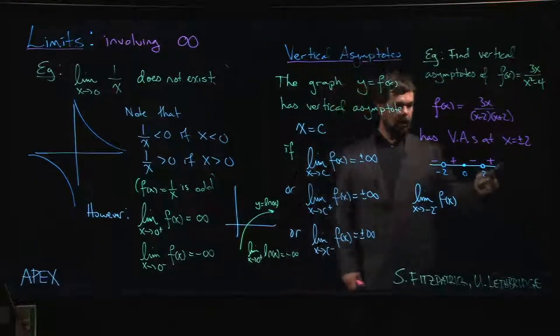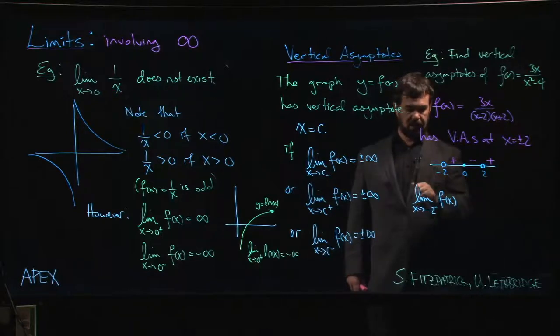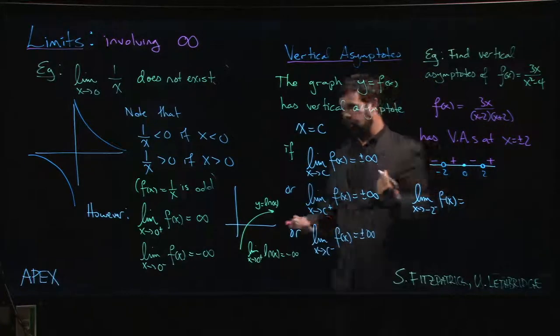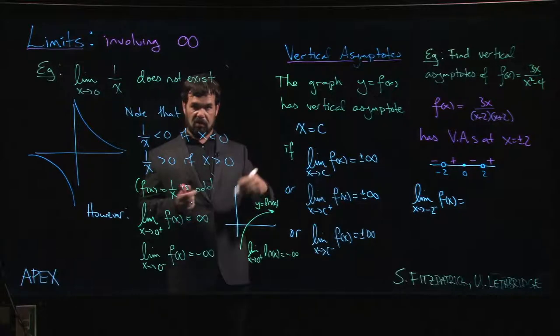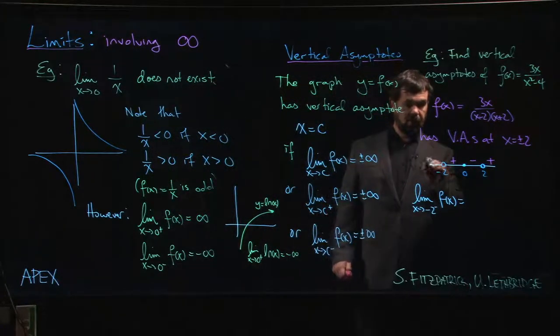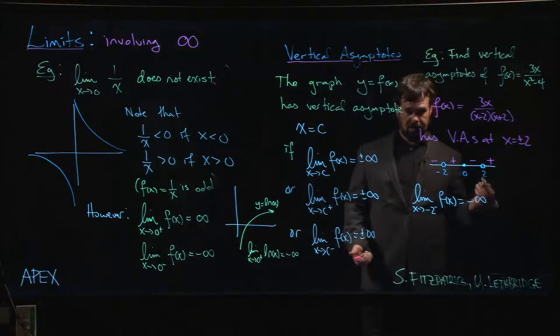Well, I look at my sign chart, I see that when x is to the left of minus 2, f of x is negative. I've got a vertical asymptote. I'm dividing by 0 at minus 2. So I know the function is growing without bound. The only thing I don't know for sure is, is it going to plus infinity or minus infinity? Sign chart says minus. So I get minus infinity.